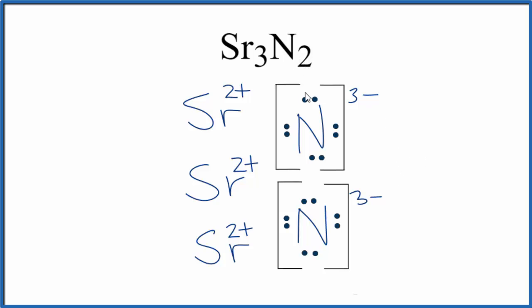You'll note that this is what we call a formula unit. Strontium nitride will exist as a crystal when it's a solid, and because of that, you'll have a repeating pattern of these formula units. But this gives us a good idea about how the electrons are transferred from the metal to the nonmetal in the Lewis structure of Sr3N2, strontium nitride. Thanks for watching.